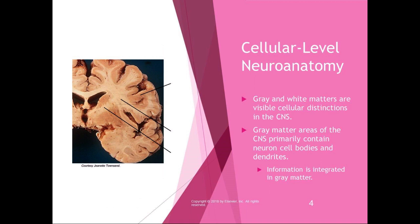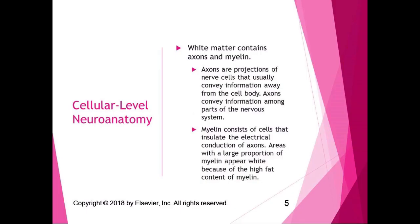White matter appears white in imaging — gray matter is gray and white matter is white just by color. The reason white matter is white is because it contains myelin. The white matter is composed of axons; the cell bodies are in the gray matter and the axons are in the white matter. Axons are projections of nerve cells that usually convey information away from the cell body and convey information between different parts of the nervous system.